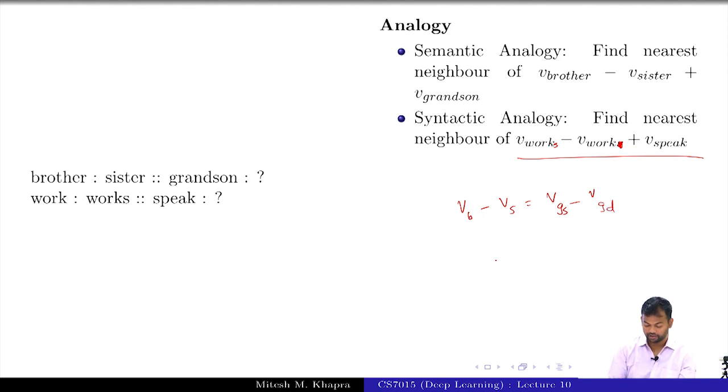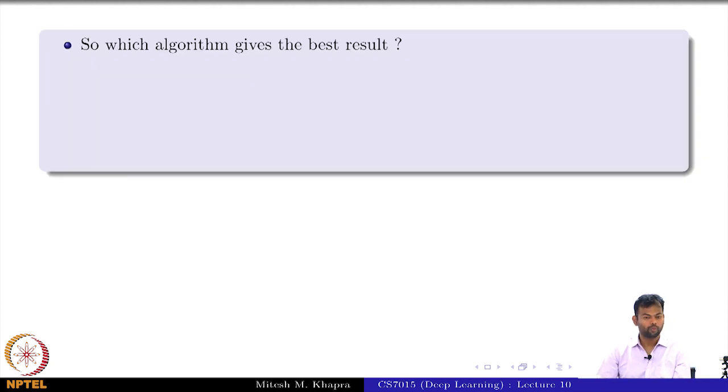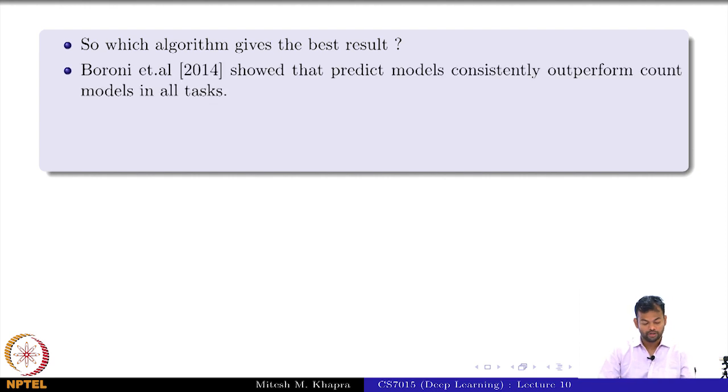You would want V_brother minus V_sister is equal to V_grandson minus V_granddaughter. So now which algorithm gives the best result? Whenever we see a bunch of algorithms, same as we did with Adam and Adagrad and so on, we always want to answer this question: which of these gives the best result?